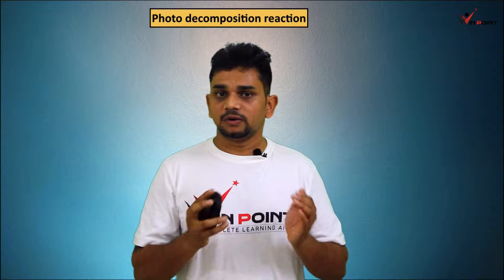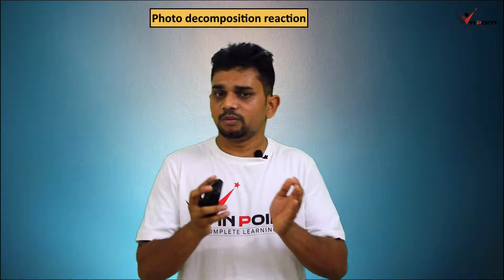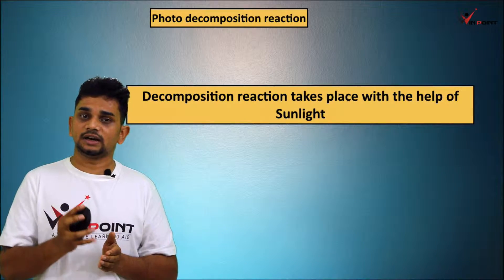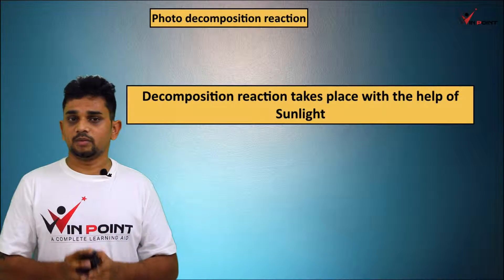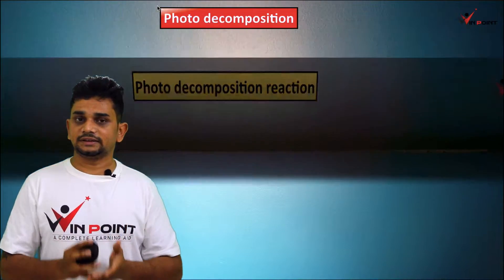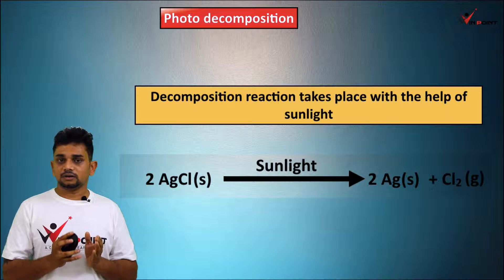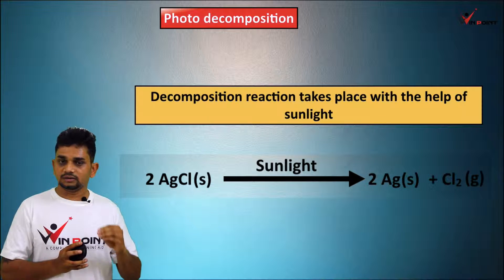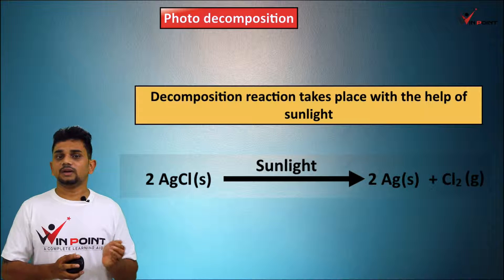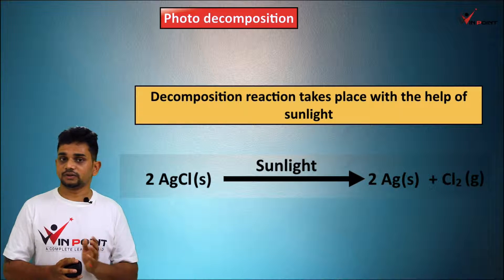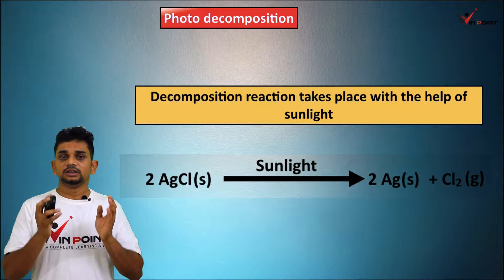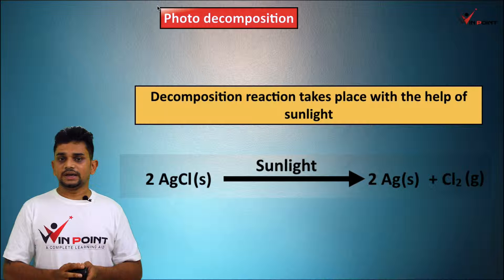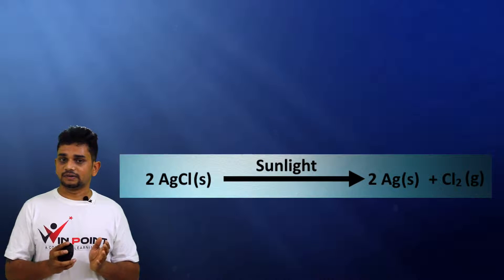Now we can discuss photo decomposition reaction. What do you mean by photo decomposition reaction? Decomposition reaction that takes place with the help of sunlight is known as photo decomposition reaction. We can take an example. We are taking silver chloride. When silver chloride is exposed to light, it is going to convert into silver and chlorine. It is a decomposition reaction. 2AgCl gives 2Ag plus Cl2 in the presence of sunlight.